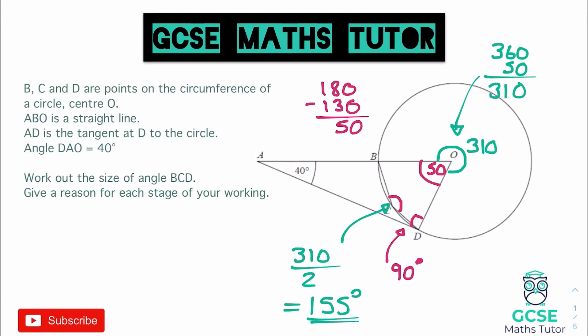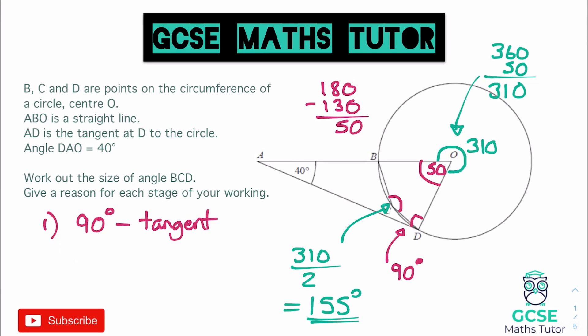It's very important to give the reason: angles at the centre are double the angle at the circumference, or angles at the circumference are half the angle at the centre, via the same arc. This question requires written reasons, so make sure they are clearly placed next to your working. A good tip for the exam is to label your steps — step one: 90 degrees with the tangent reason; step two: 50 degrees is angle DOB, fully explained.